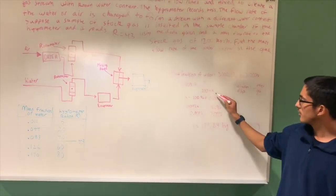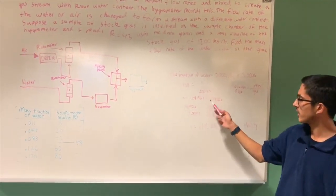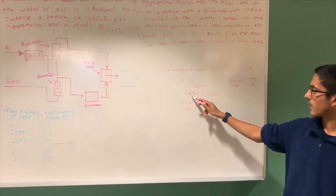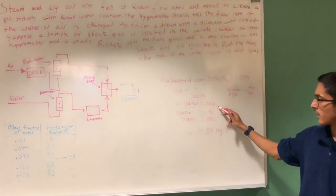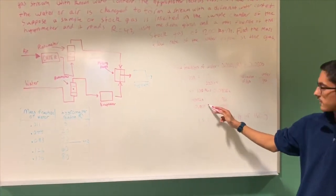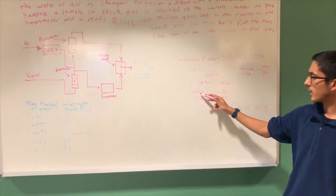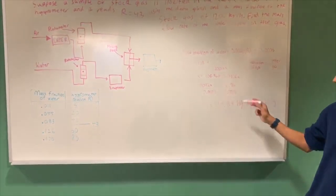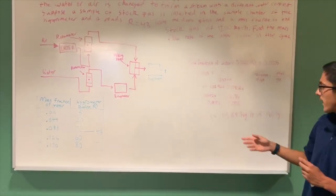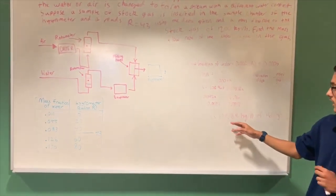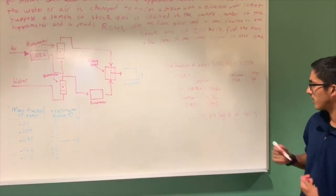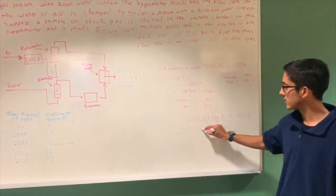To solve for x algebraically we multiply 1200 plus x to get 108.96 plus 0.0908x equals x. Moving all the x's to one side gives 0.9092x equals 108.96, and dividing by 0.9092 gives x equals 119.84 kilograms per hour of water vapor. This is our answer.